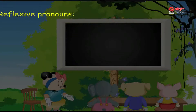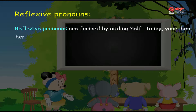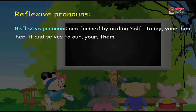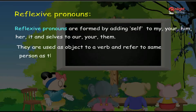Reflexive Pronouns are formed by adding 'self' to my, your, him, her, it, and 'selves' to our, your, them. They are used as object to a verb and refer to the same person as the subject.